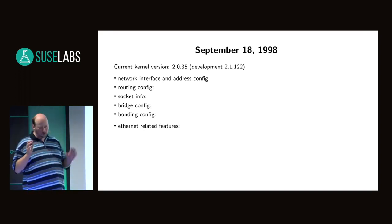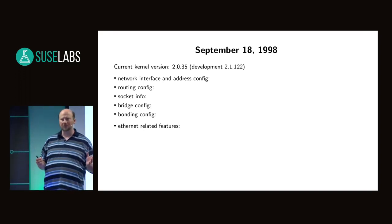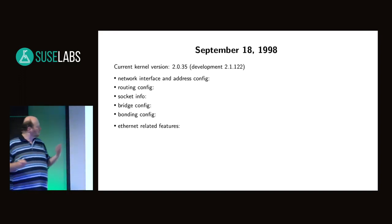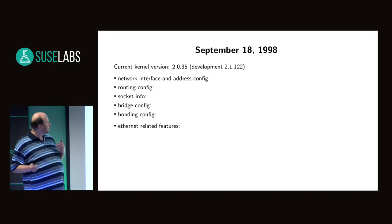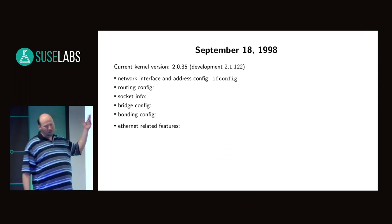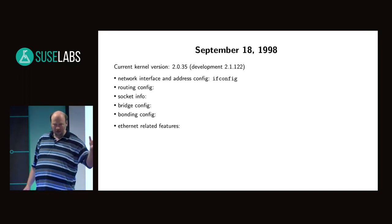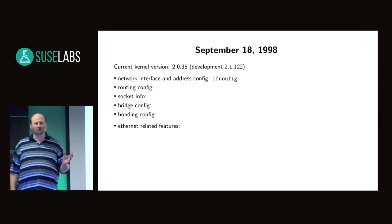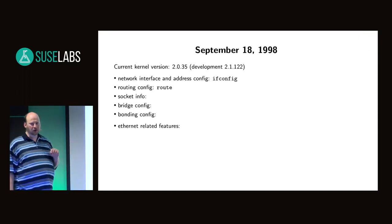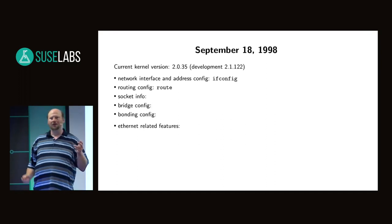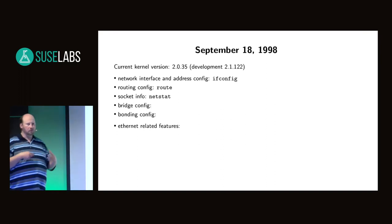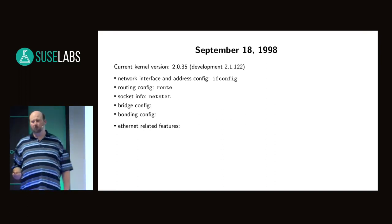What are we using to configure the interfaces and addresses? ifconfig — everyone knows. What are we using to configure routing? And what are we using to get socket information? netstat. What are we using to configure bridges? BRCTL, right.